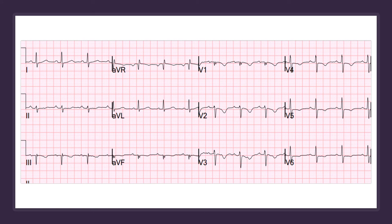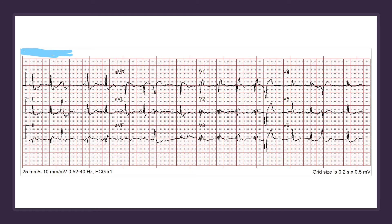Another pattern: here there's no upright V1, but you can clearly see an incomplete right bundle branch block, which should concern you. There's an S wave in V6 — that's abnormal, it should be upright. Downward-pointed T waves in V1, V2, V3, and lead III. Another example of an acute PE. This patient didn't have a rightward axis, but you don't have to have all those things.